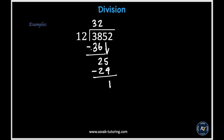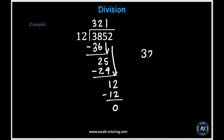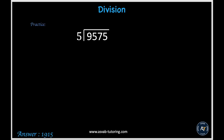Since 1 is far less than 12, we bring down the last digit of the dividend, which is 2, to get 12. We know that 12 times 1 is 12, so we put it down and subtract to get 0. We end up with a 0 remainder and have used up all the digits in the dividend. So our final quotient ends up being 321.